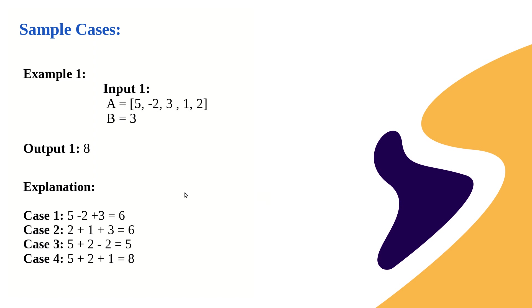Case 3: pick 1 from the front (5) and 2 from the back (2 and -2) — 5 + 2 + (-2) = 5. Case 4: pick 1 from the front (5), then 2 from the back (2 and 1), since picking the last element makes 1 the new last — 5 + 2 + 1 = 8. This is the maximum possible sum out of all four cases.